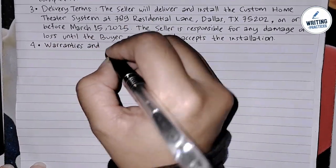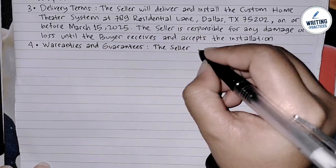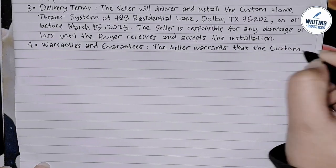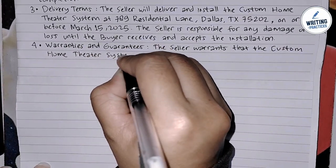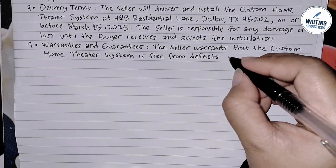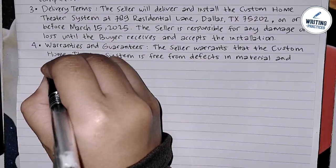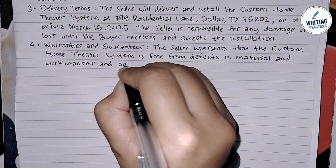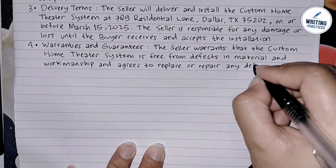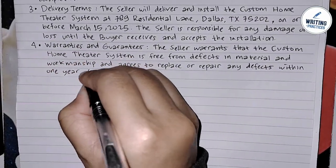In the fourth point, talk about warranties and guarantees. Outline any warranties provided by the seller concerning the product's quality and workmanship. Including warranty information protects the buyer by ensuring they have recourse if the product is defective. For example: '4. Warranties and Guarantees: The seller warrants that the custom home theater system is free from defects in material and workmanship and agrees to replace or repair any defects within one year of installation.'